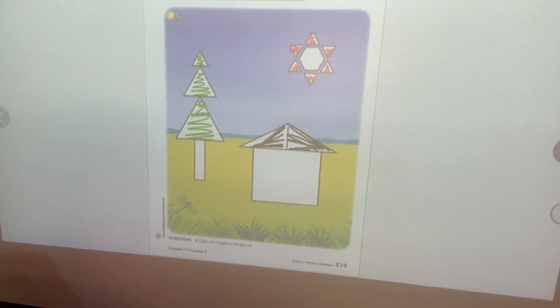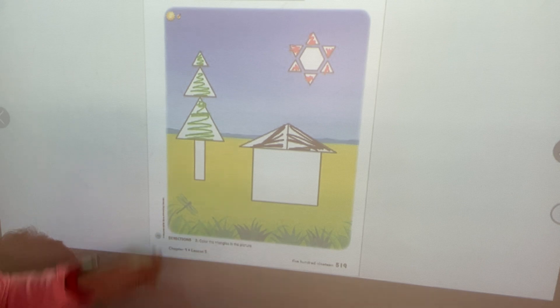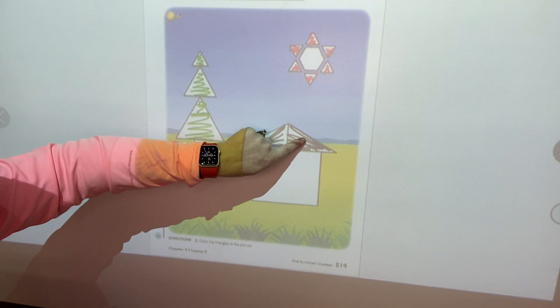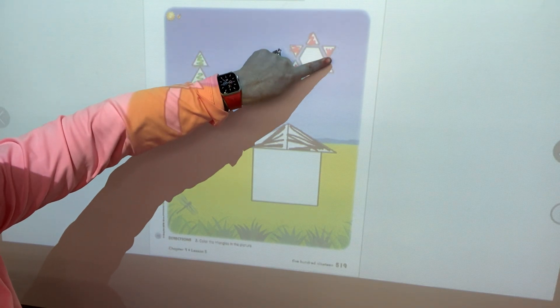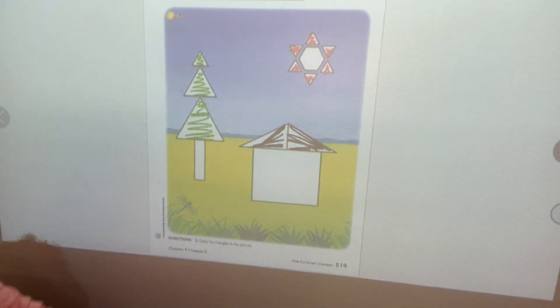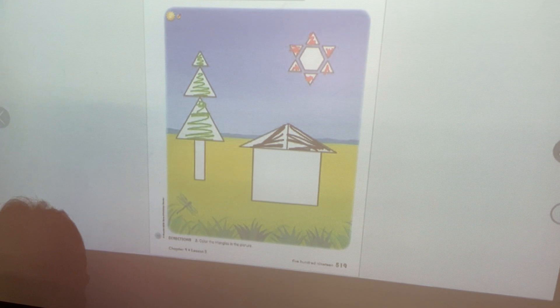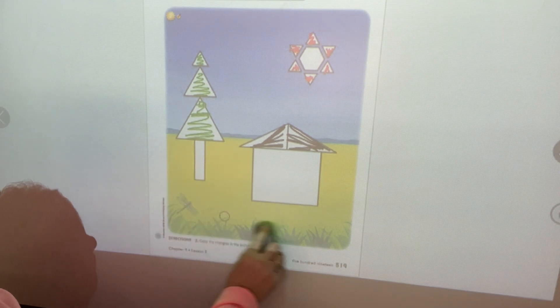I don't have a yellow. I made mine red. So there are one, two, three, four, five, six, seven, eight, nine, 10, 11 triangles on this page. One more page to go. Page 520.